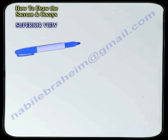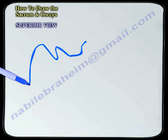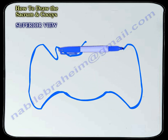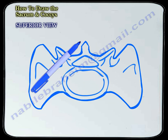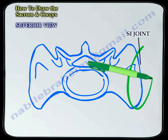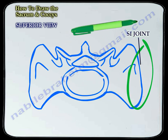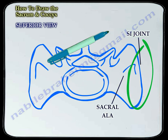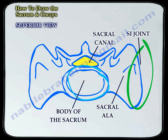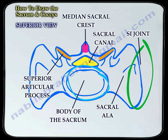This is a superior view of the sacrum, which looks like an inlet view in an x-ray. Here you can see the sacroiliac joint, the sacral ala, the body, the sacral canal, the superior articular facets of the sacrum, and the median sacral crest.